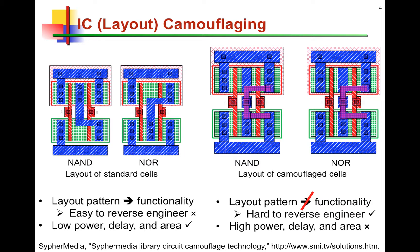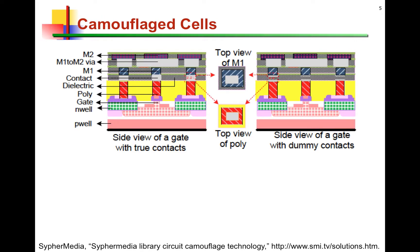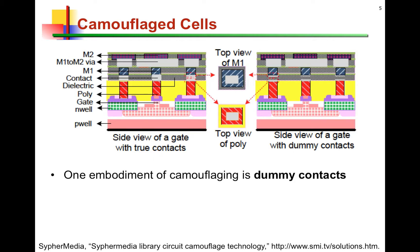However, as the picture demonstrates, these camo cells are slightly larger in terms of area, consume more power, and are potentially slower. So there's a price to pay to get this resilience against reverse engineering — you pay in terms of area, power, and delay. One way this can be accomplished is through the use of dummy contacts, an invention by a company called Cypher Media, which provides camouflage library cells to design companies.